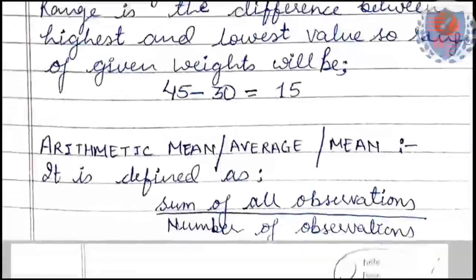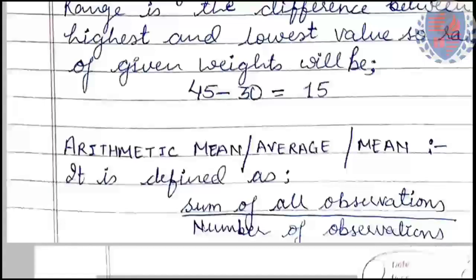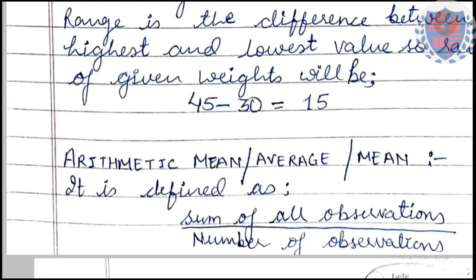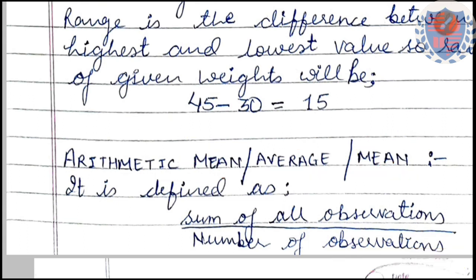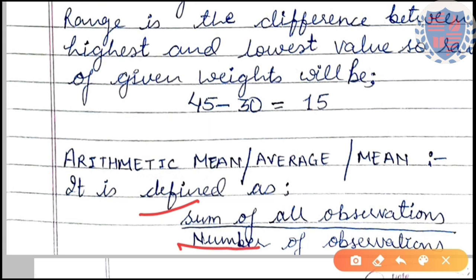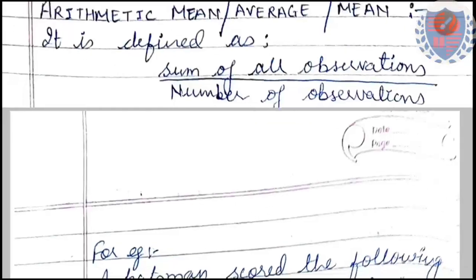Now come to the next topic: arithmetic mean, or average, or mean — these are all the same terms. You may say arithmetic mean, average, or mean; all are the same. You have studied average in earlier classes. Arithmetic mean is defined as the sum of all observations divided by the number of observations.